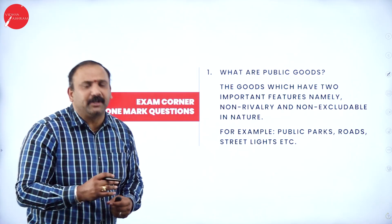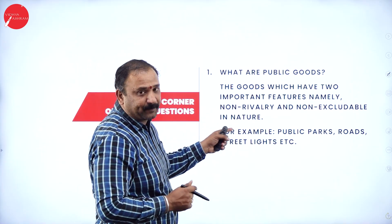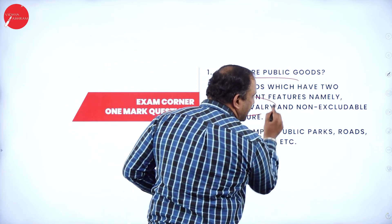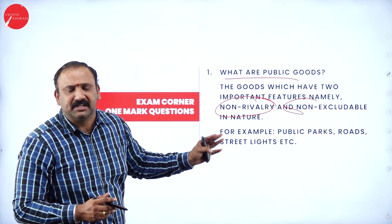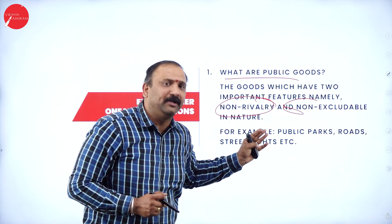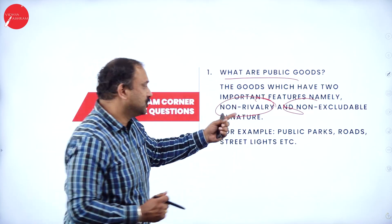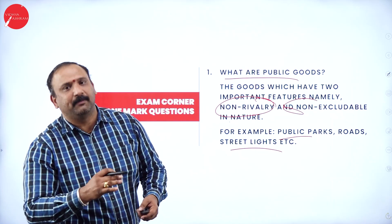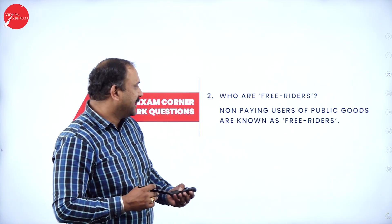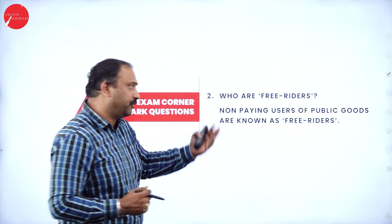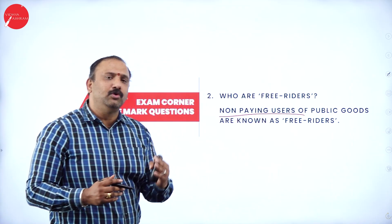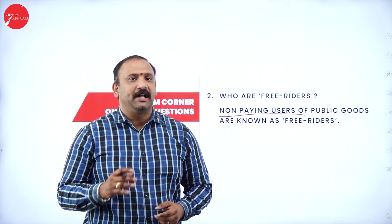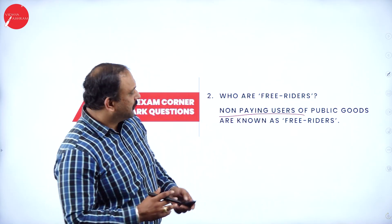Now let's move to the exam corner. One of the most repeated questions in this chapter is: what are public goods? Public goods are ones which have two important factors — namely non-rivalry and non-excludable in nature. These are goods provided by the government for the common benefit of the people, and this would include public parks, roads, street lights, and all those factors which give common benefit to everyone. Followed by, who are free riders? Non-paying users of public goods are known as free riders, meaning people who do not pay anything and use government property. Free riders are people who will never pay anything for the usage of government utilities.